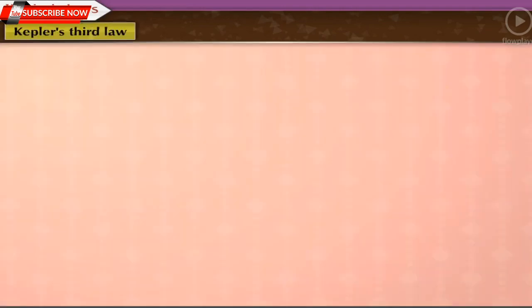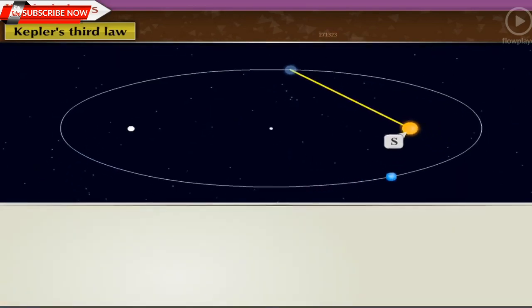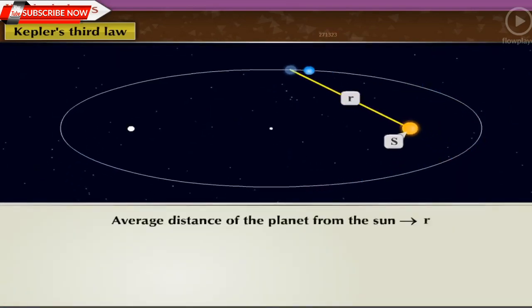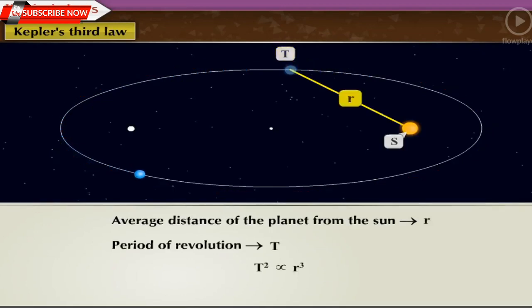Kepler's Third Law. The square of its period of revolution around the sun is directly proportional to the cube of the mean distance of a planet from the sun. Thus, if R is the average distance of the planet from the sun and T is its period of revolution, then T square is directly proportional to R cube.